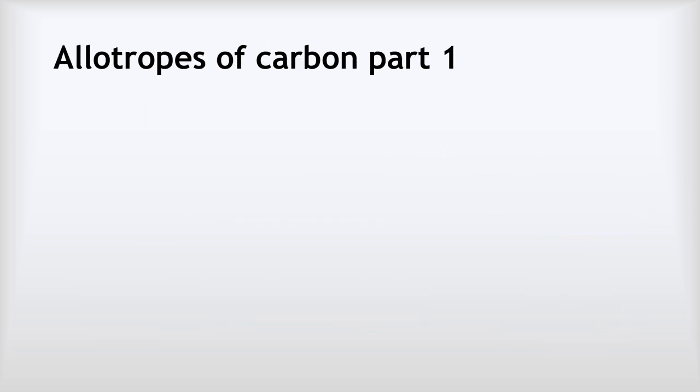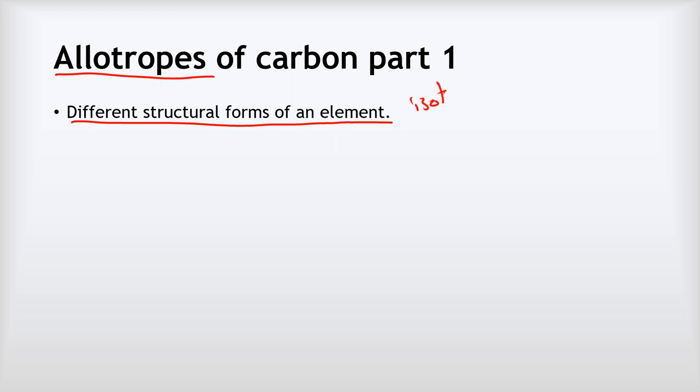The allotropes of carbon. What on earth is an allotrope? Well, allotropes are different structural forms of an element. Now what I mean by that, I don't mean isotopes, so we're not talking the same number of protons, different numbers of neutrons. I'm talking about the 3D arrangement of the actual carbon atoms themselves.